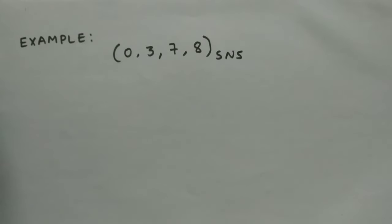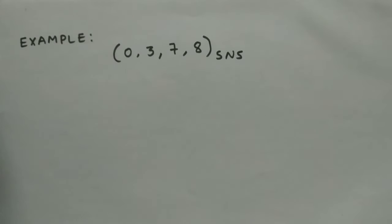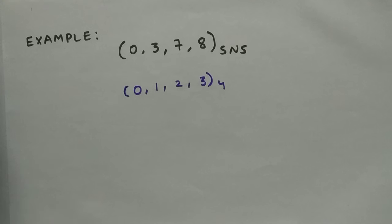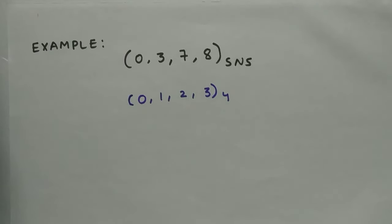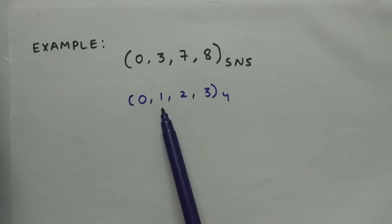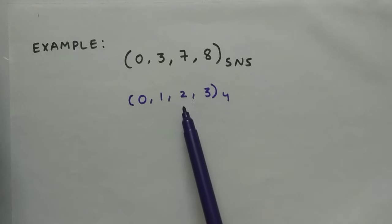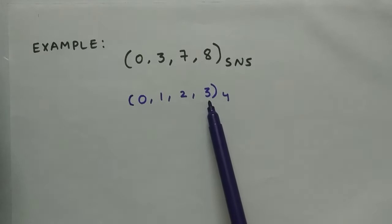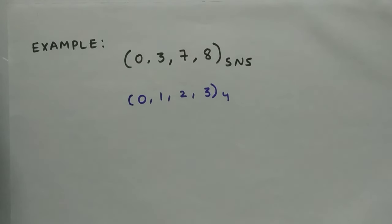We can't use this special number system right now because we don't know how it works. To use it, we need to convert this SNS into a known number system. We have only 4 values: 0, 3, 7, and 8. We know a number system with exactly 4 values — base 4 — which consists of 0, 1, 2, and 3. So base 4's 0 represents 0 in SNS, 1 represents 3 in SNS, 2 represents 7, and 3 represents 8. From SNS we can convert to base 4, and from base 4 we can convert to base 10 or any other number system.